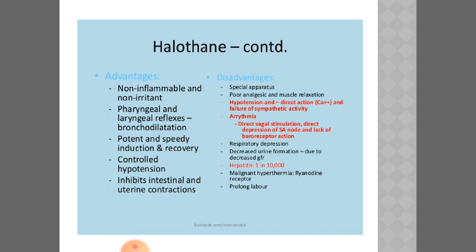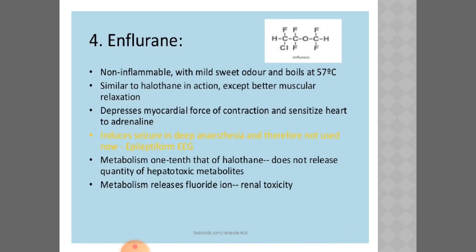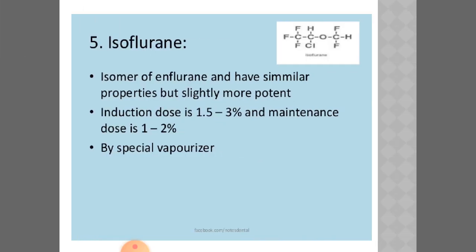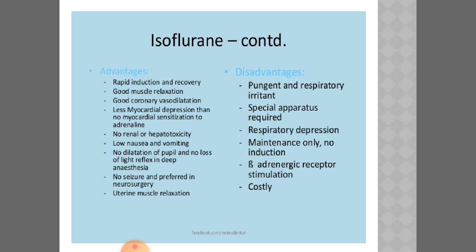Enflurane is similar to halothane, but one-tenth of the halothane dose is sufficient. It is given in combination with other agents. Its main disadvantage is that it releases fluoride ions, which can cause renal toxicity. Isoflurane is an isomer of enflurane with similar properties. Induction dose is 1.5 to 3 percent and maintenance dose is 1 to 2 percent.